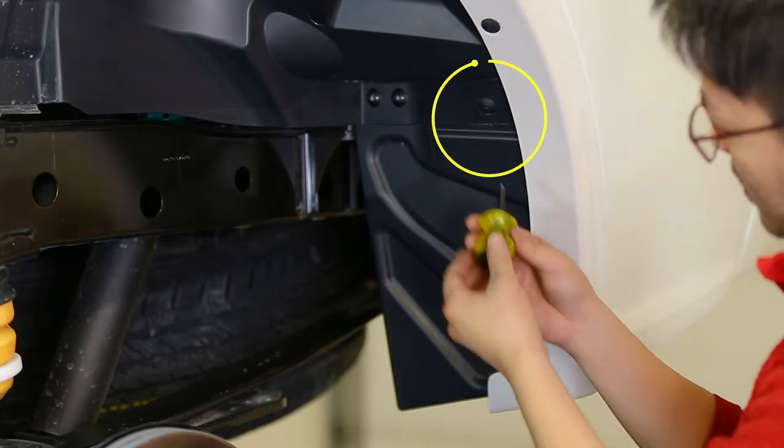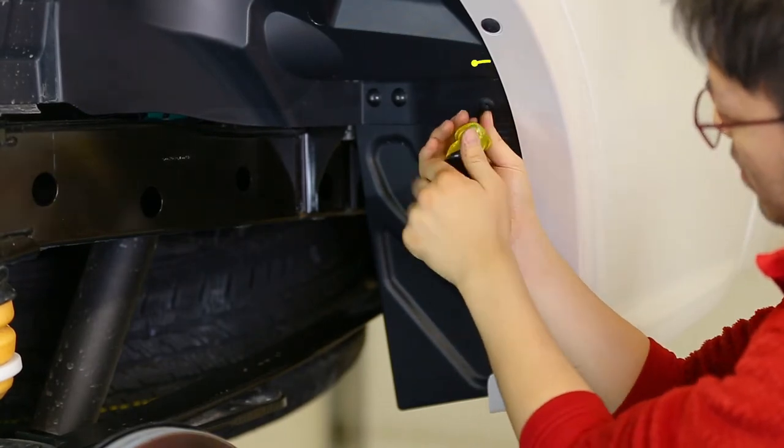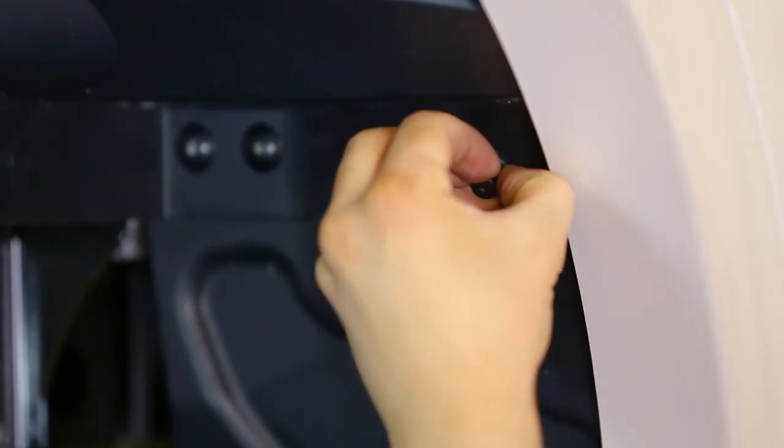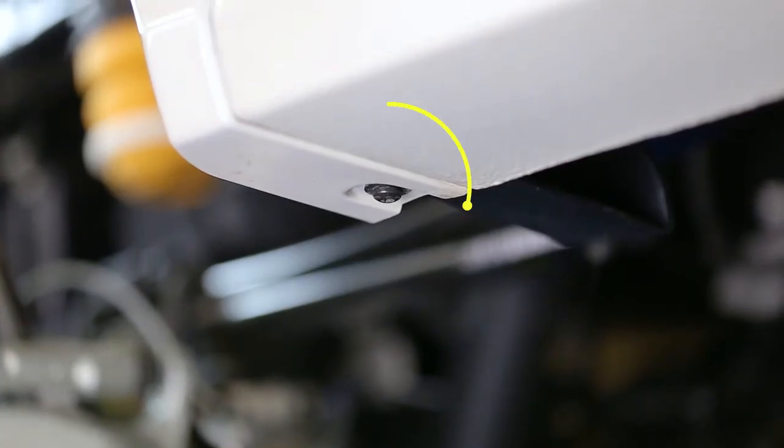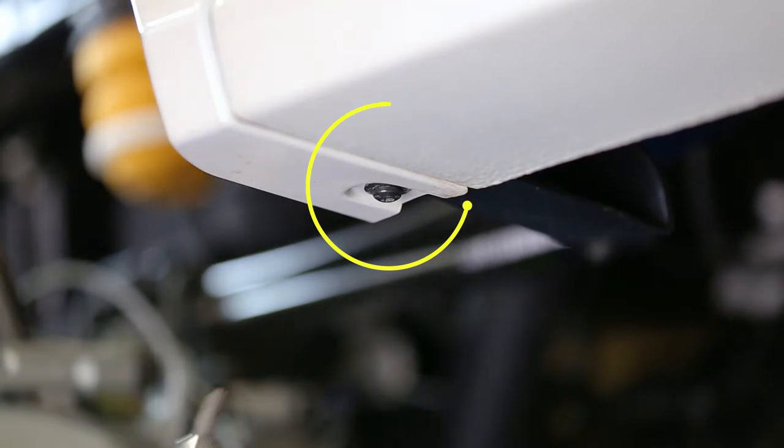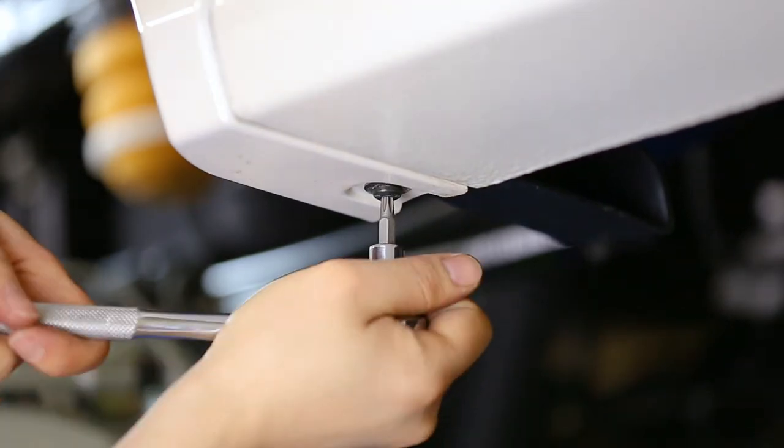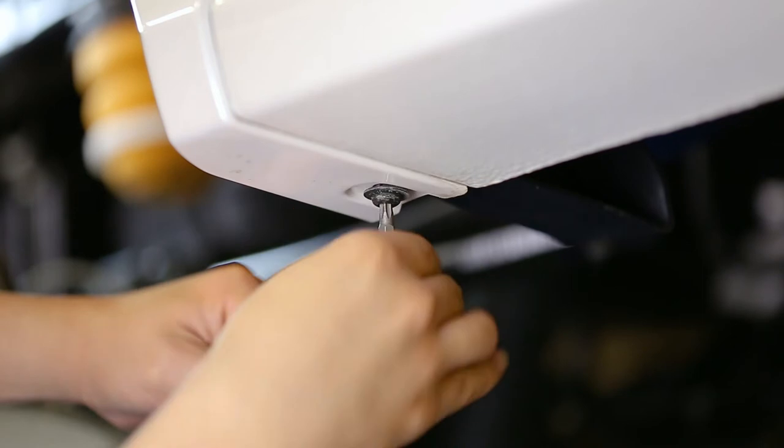To start, remove the factory push pin on the plastic liner with a Phillips screwdriver, as well as the factory bolt with the T30 Torx drive on the underside of the fender. Set the bolt aside for later reinstallation.